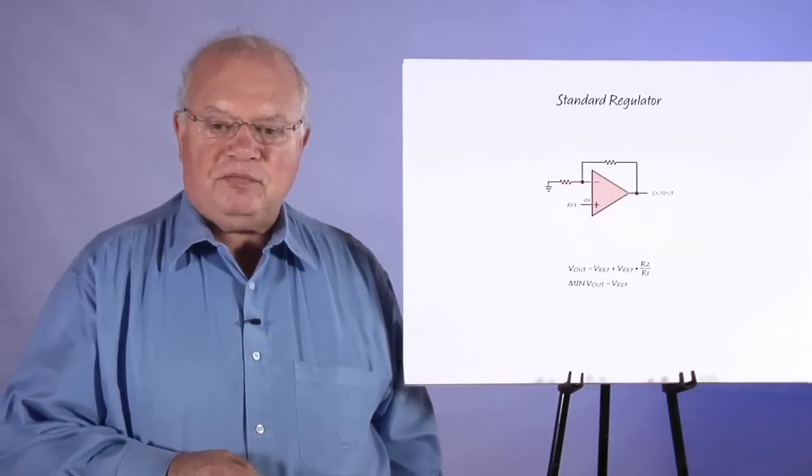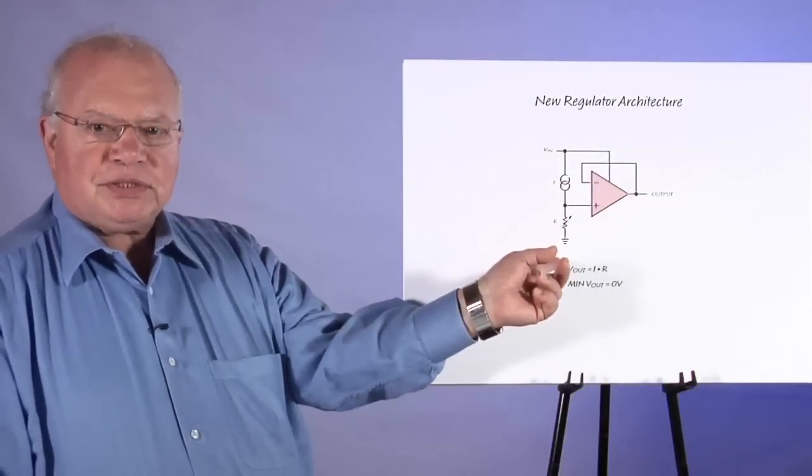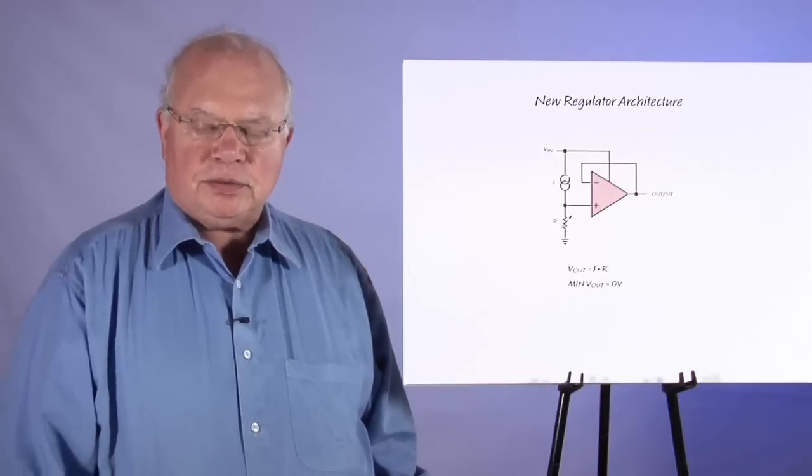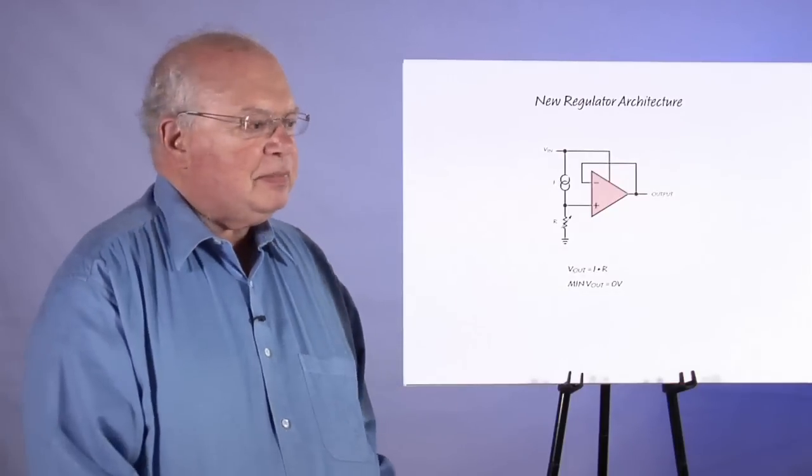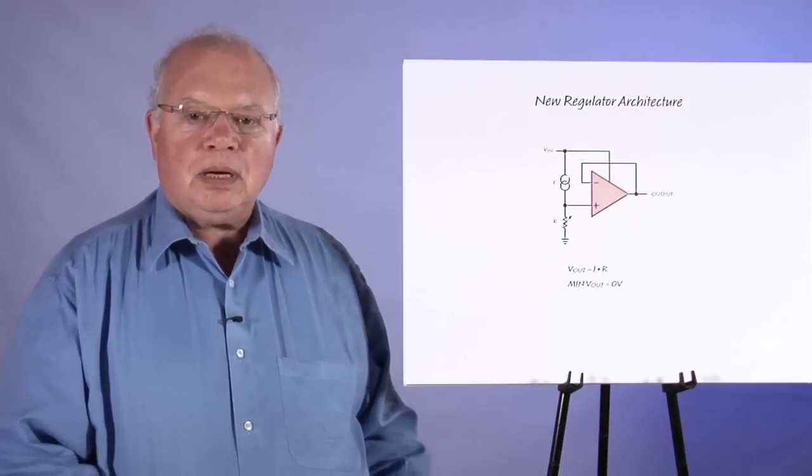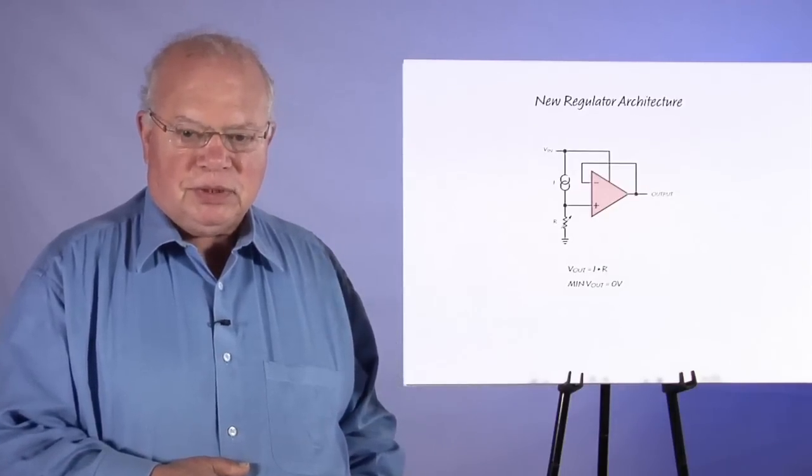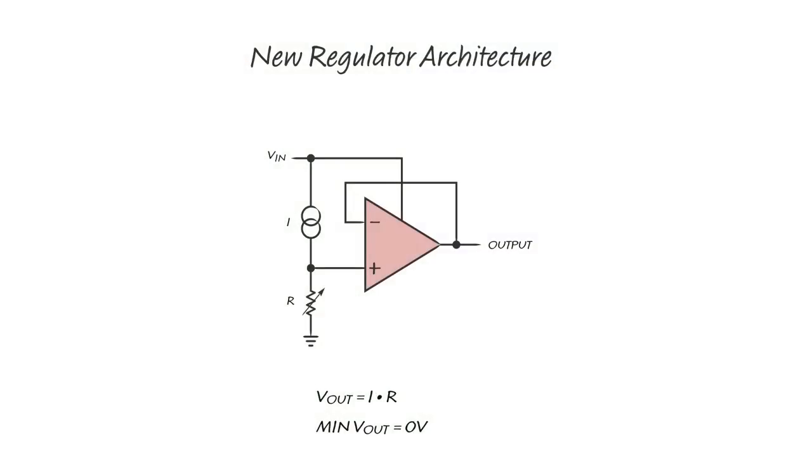Our new architecture for regulators uses a current source reference. The current source reference feeds a current through a resistor, and the amplifier is set up as a follower, so the output of the amplifier is the same as our reference voltage across the reference resistor. If the resistor goes to zero, our output goes to zero. This architecture has a couple of other really good features: the amplifier's always running at the same gain, so the regulation is independent of output voltage, and you can parallel them. You tie the set resistors together and the outputs are within a few millivolts of each other, so you can tie them together with a very small ballast resistor.